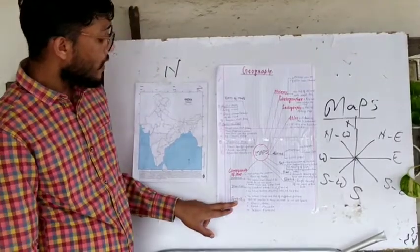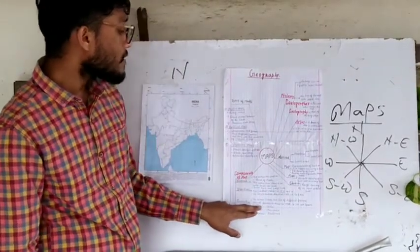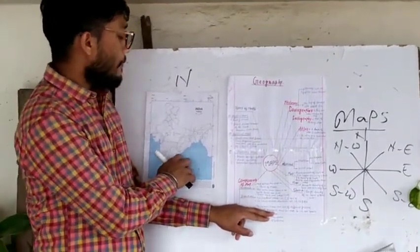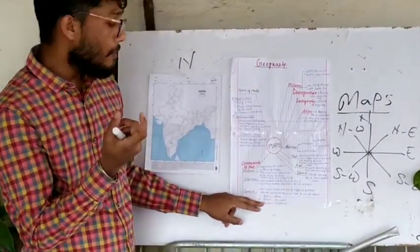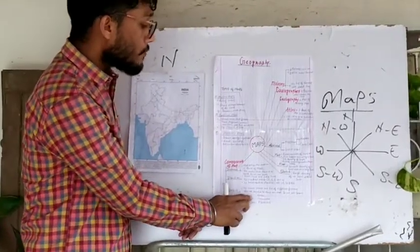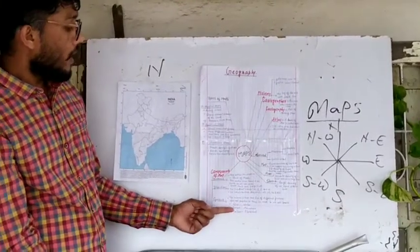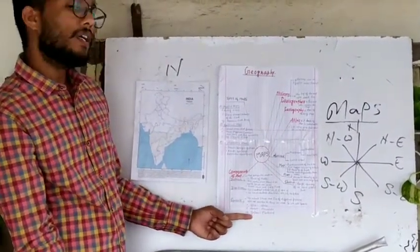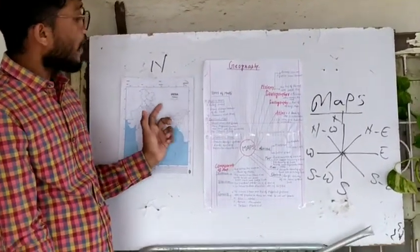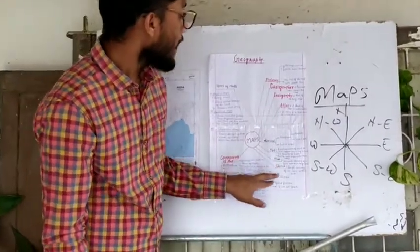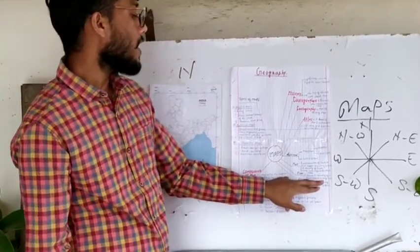The third component is symbols. The actual shape and size of different features cannot be drawn on a map, so we always use symbols. For example, blue color is used to locate water bodies, brown color is used for mountains, and yellow color is used to locate different features on a map.